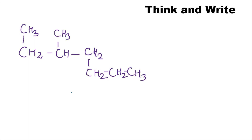Now here is a question for you: you have a given compound with a branch — write its IUPAC name. First look for the longest chain, then check for branches, then check for any functional groups, follow the rules, and write the name. I am very sure you must have learnt nomenclature very well. In the next session we are going to study about homologous series. Till then, bye bye and take care of yourself.